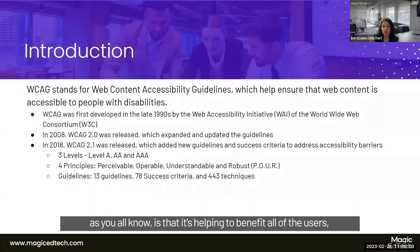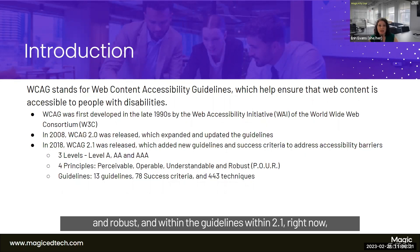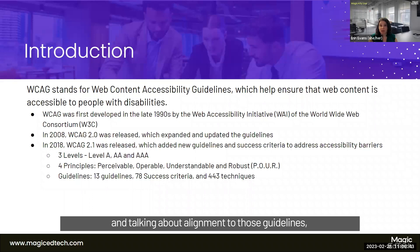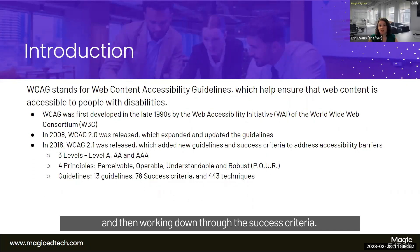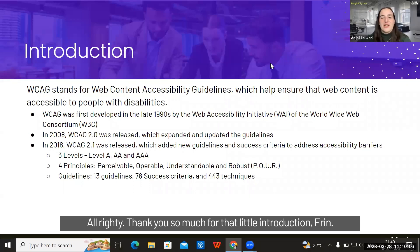The guidelines have Single A, Double A, and Triple A conformance levels. Level A is the bare minimum; Double A is where the majority of websites aim, giving access to most users; Triple A is the gold standard with the most rigorous guidelines. The guidelines build on each other — anything covered in 2.0 is covered in 1.0, and anything in 2.1 is covered in 2.0. There are four principles: perceivable, operable, understandable, and robust. Within 2.1 there are 78 success criteria and 443 different techniques.